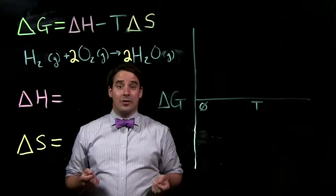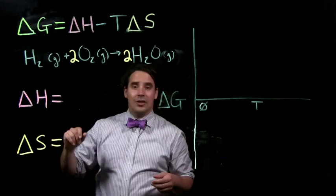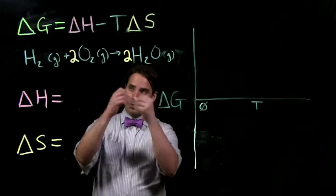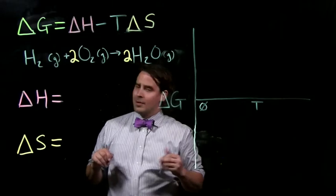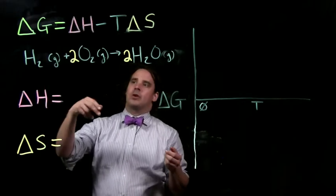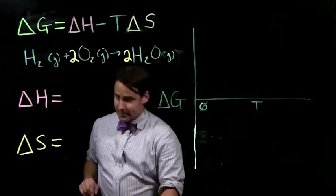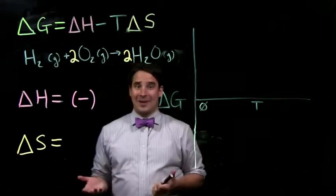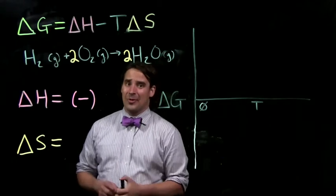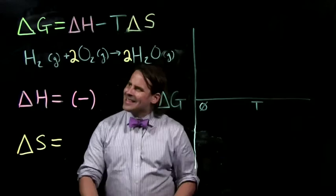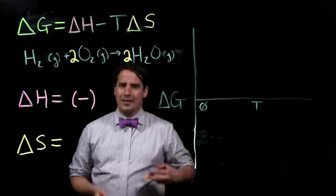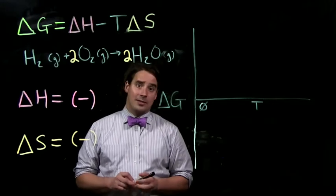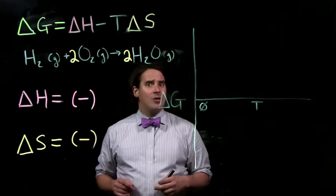Our next example is another type of combustion — the combustion of hydrogen, also known as the balloon reaction. We're taking hydrogen, reacting it with oxygen, and making water as its oxide. Anytime we see combustion, we know it's a negative delta H. What about the delta S? In this case, we're going from 3 moles of gas in the reactants to 2 moles of gas in the products. So we're making fewer moles of gas in the products, meaning the entropy change is going to be negative as well. What implications does this have on free energy, delta G?